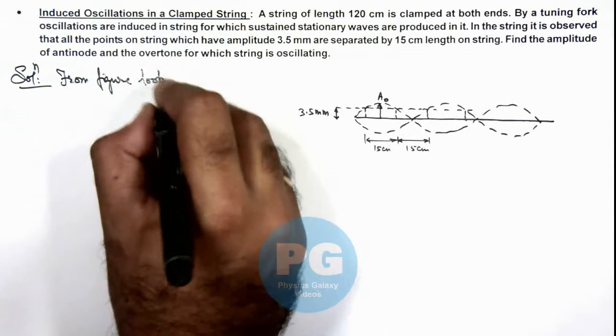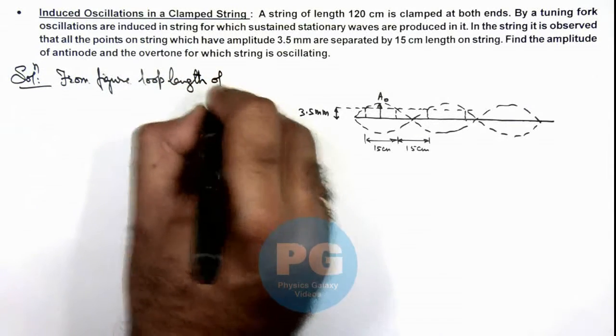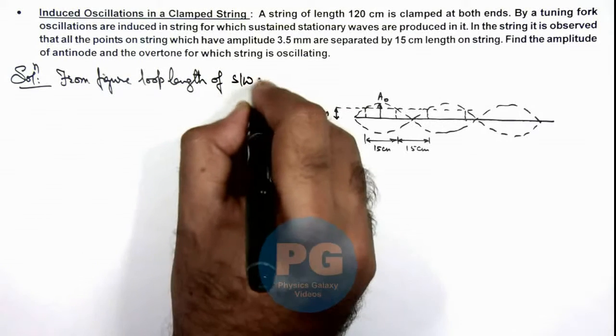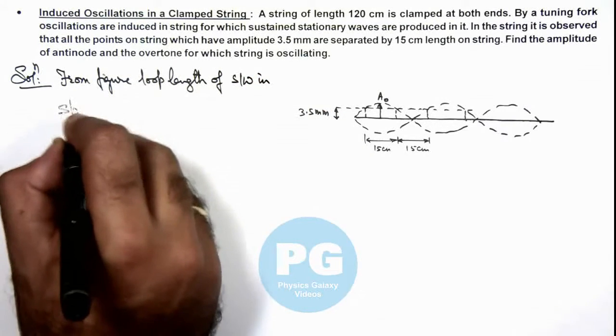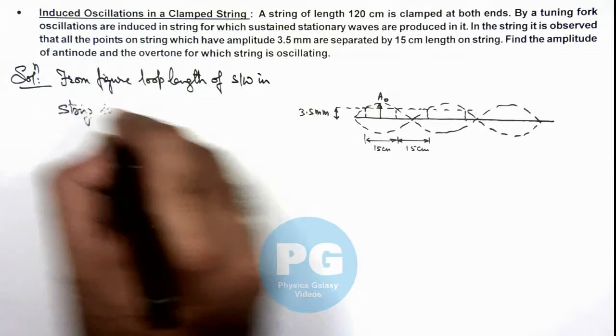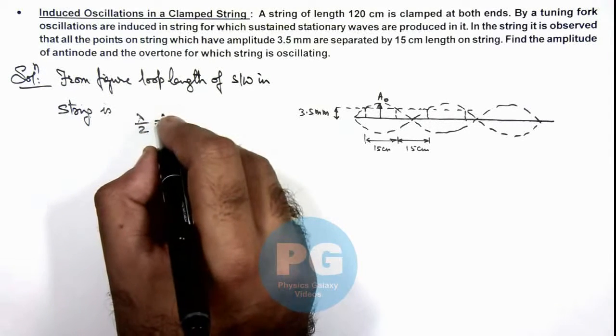Loop length of stationary waves in string, which is λ/2, is equal to 30 centimeters.